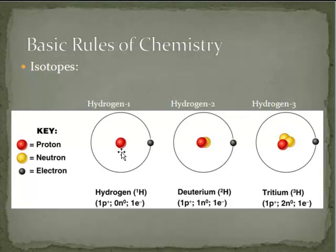Look at these three examples of hydrogen: hydrogen one, hydrogen two, hydrogen three. All three exist in nature. What makes them different is the number of neutrons. In hydrogen one, we have zero neutrons. In hydrogen two, we have one neutron. In hydrogen three, we have two neutrons.